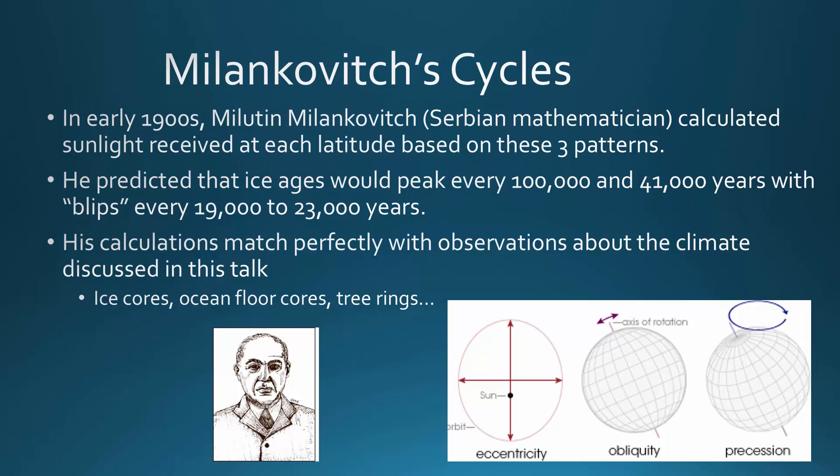His calculations match perfectly with observations about past climate — things like ice cores, ocean floor cores, tree rings, and observations from coral. All of these different observations match perfectly with what Milankovic's cycles predicted we'd see in terms of past climates and temperatures.